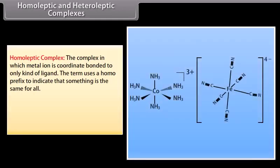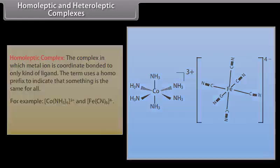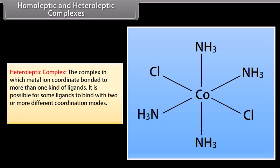Homoleptic and Heteroleptic Complexes. A homoleptic complex is one in which the metal ion is coordinate bonded to only one kind of ligand, e.g., [Co(NH3)6]3+ and [Fe(CN)6]4−. A heteroleptic complex is one in which the metal ion is coordinate bonded to more than one kind of ligand; it is possible for some ligands to bind with two or more different coordination modes, e.g., [CoCl2(NH3)4]+.